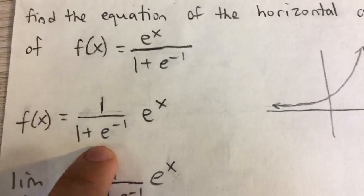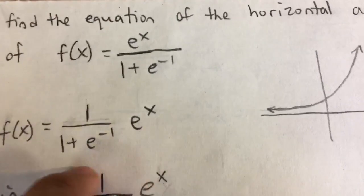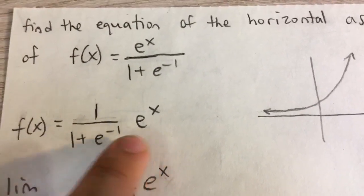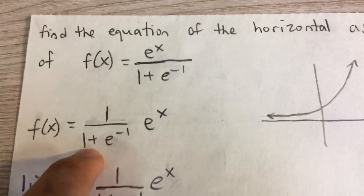So in other words, you can rewrite it like this. Take out the e to the x and treat this as a coefficient. In other words, it's just the function e to the x multiplied by some constant value.